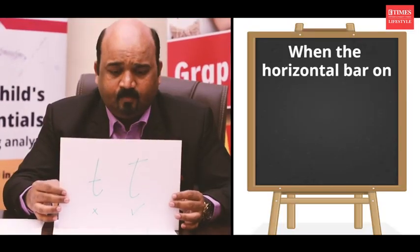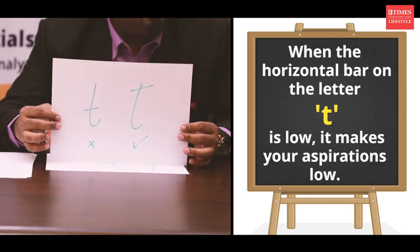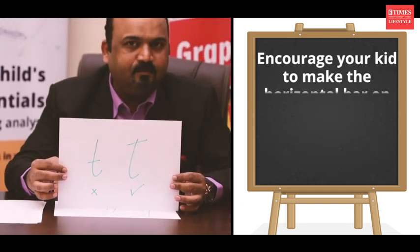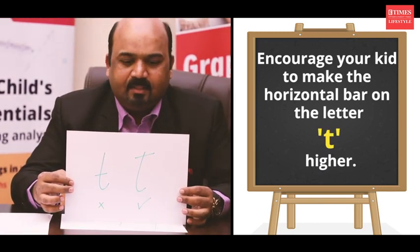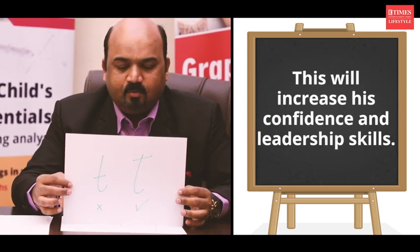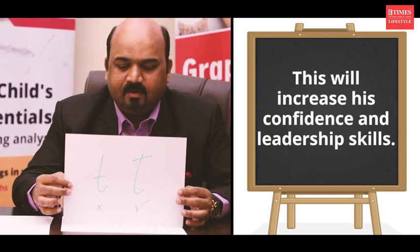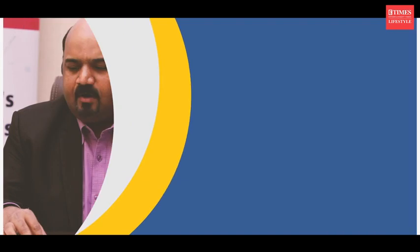The third trait is aspiration. Parents find that children don't participate in competition or other activities — they are not very aspirational. For aspiration, the key letter is the small letter 't'. If the t-bar — the horizontal line on the 't' — is low, your aspirations and self-image are low. But if the t-bar is higher, the person will want to participate, will think like a winner, will take risks, develop leadership skills, and build confidence in whatever he does.